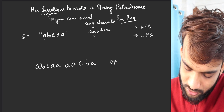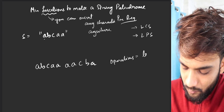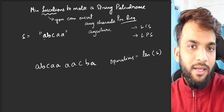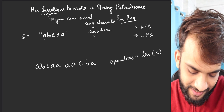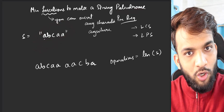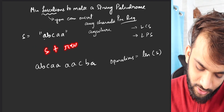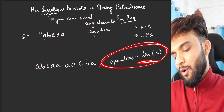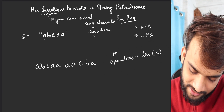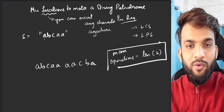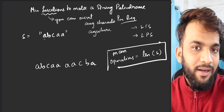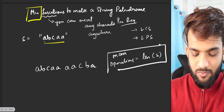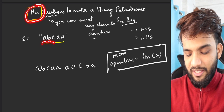So I know the number of operations required in this approach is the length of the string. I can definitely make any given string a palindrome by attaching its reverse version. So the maximum operations is the length of the string. But the question asks for the minimum number of operations.